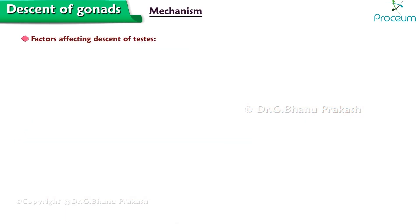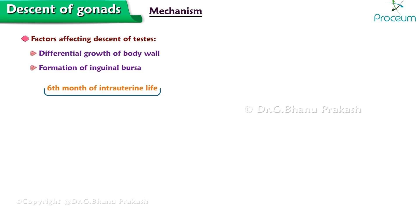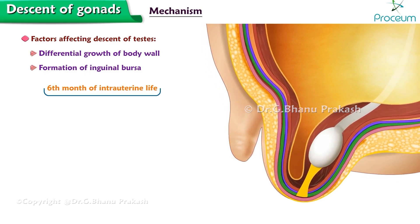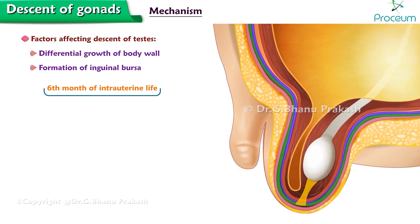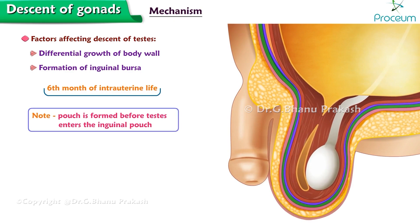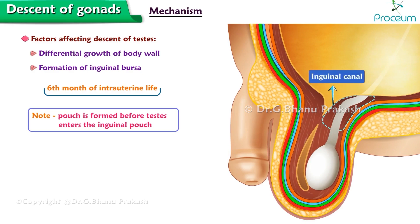Some factors affecting the descent of the testes are differential growth of the body wall and the formation of the inguinal bursa. Around the sixth month of intrauterine life, the various layers of the abdominal wall of each side show an outpouching toward the scrotum. This pouch progressively increases in size and depth and eventually reaches the bottom of the scrotal sac. Note that the pouch is formed before the testes enter the inguinal pouch. The cavity of the inguinal bursa becomes the inguinal canal, while various layers of its wall form the coverings of the testes and the spermatic cord.